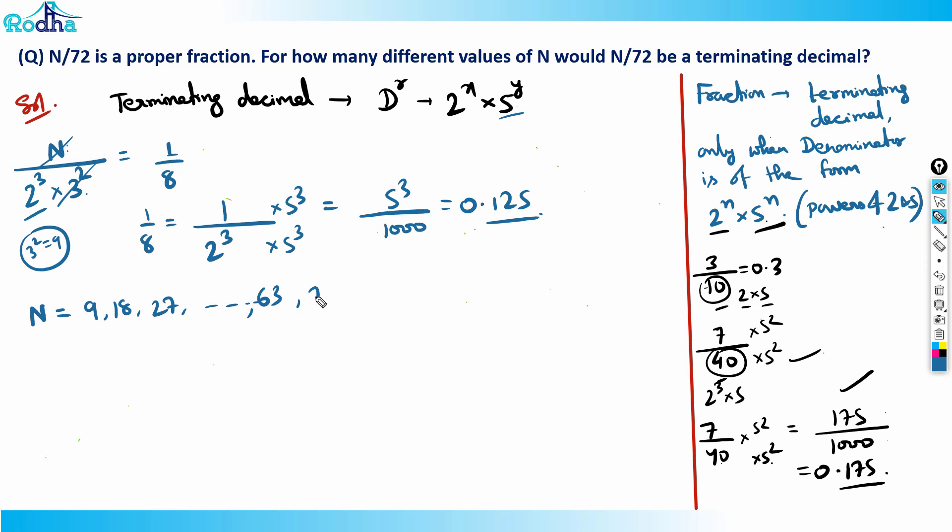why can't it be 72 or 81? Because at 72 and 81 it will not be a proper fraction. A proper fraction means the numerator must be less than the denominator. So till 63 because below we have 72 here. So till 63 we can take N and it's still a proper fraction.